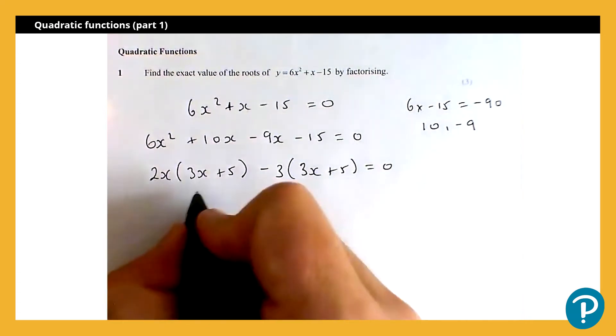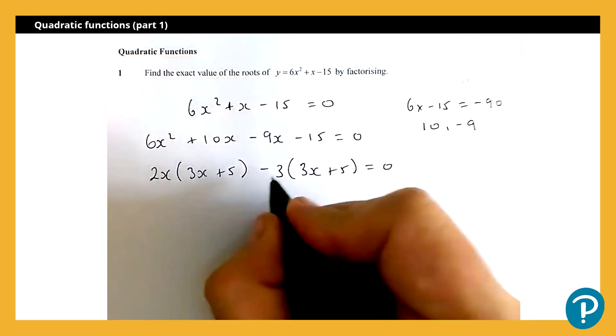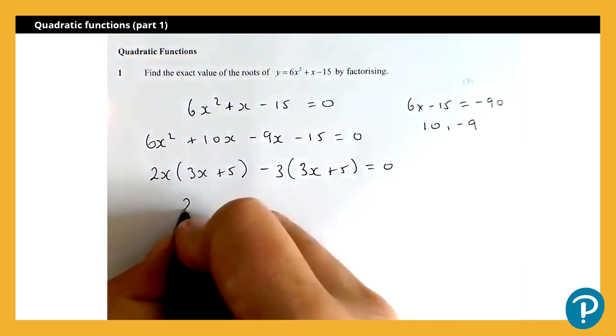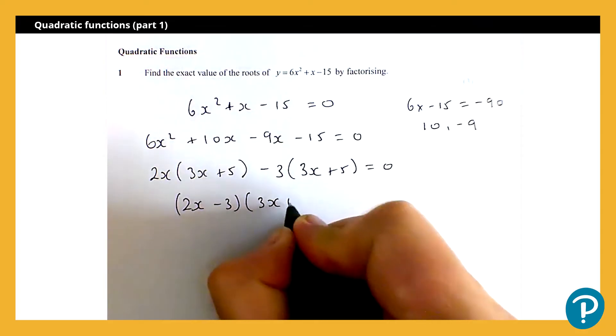Okay, so finish it off. I have got 2x and minus 3 lots of 3x plus 5, so that's 2x minus 3 times 3x plus 5.